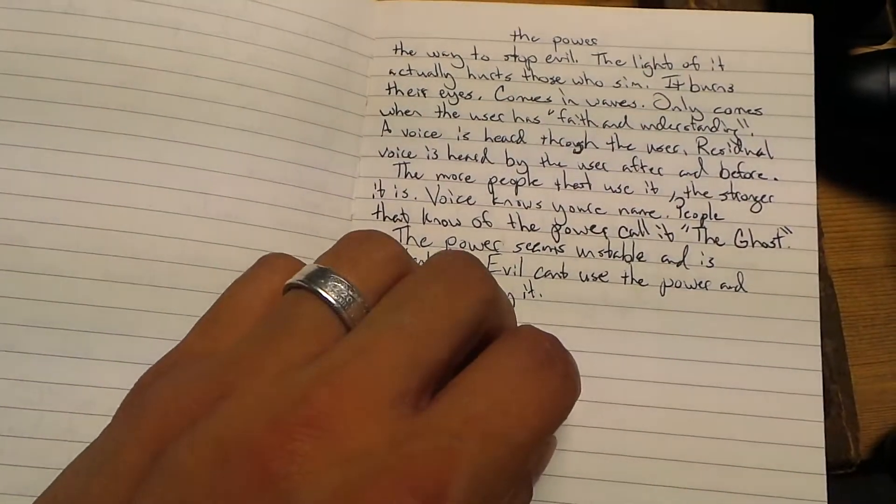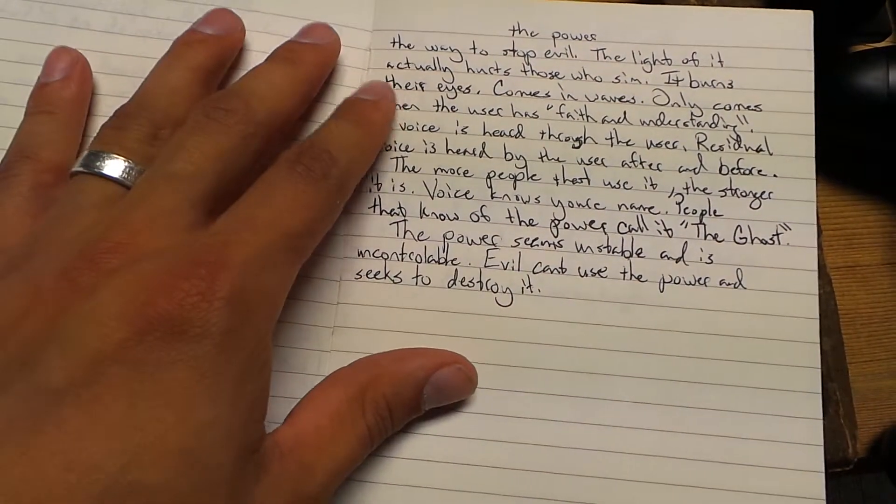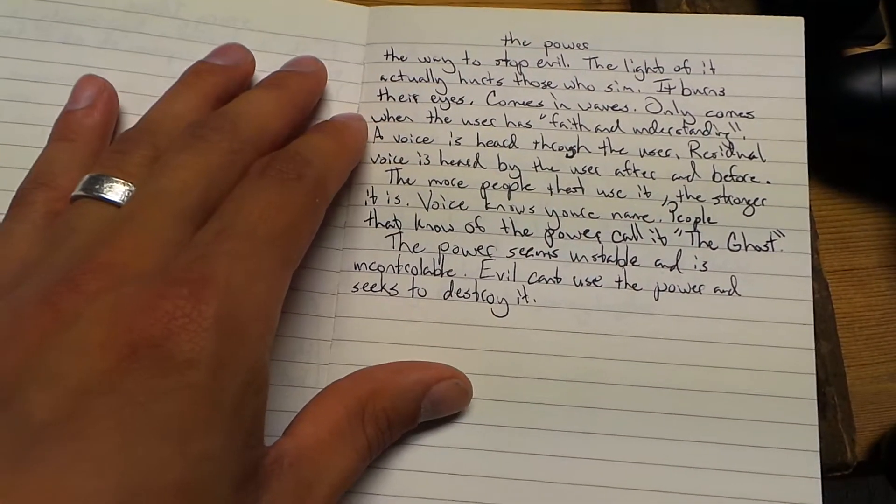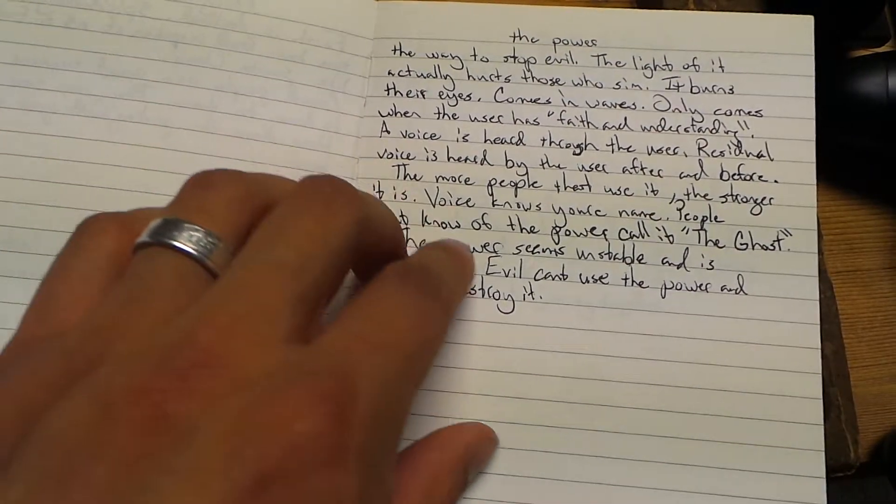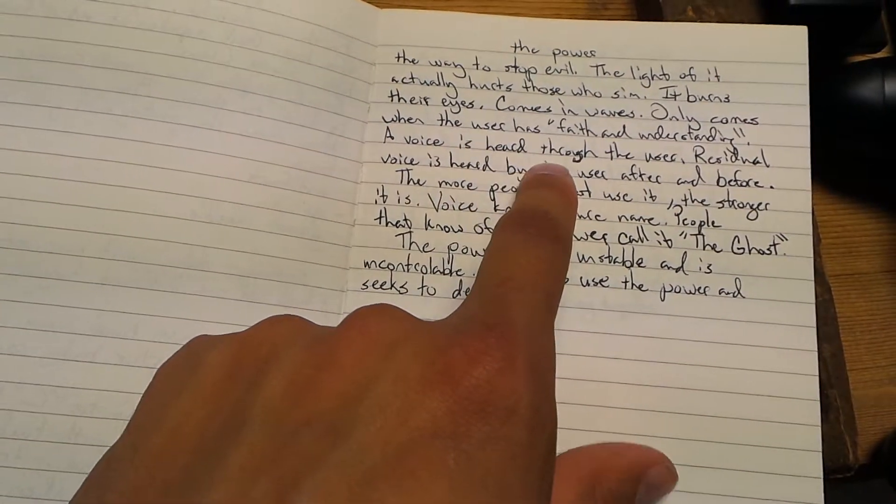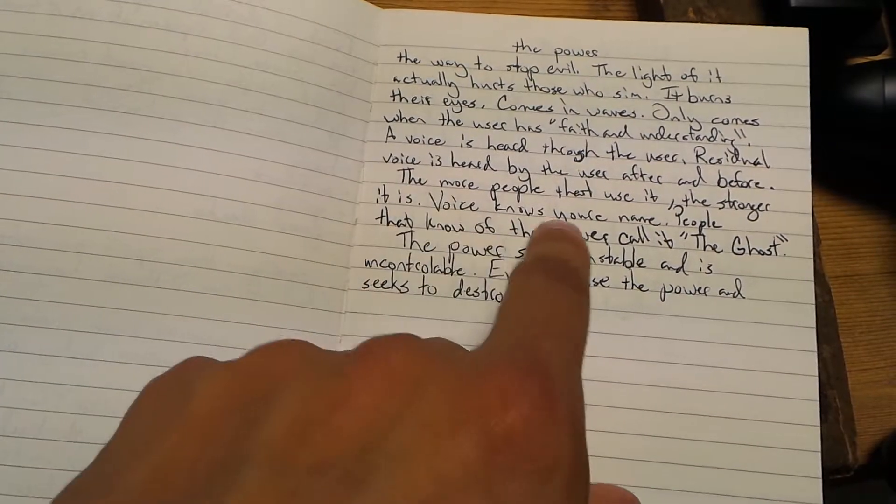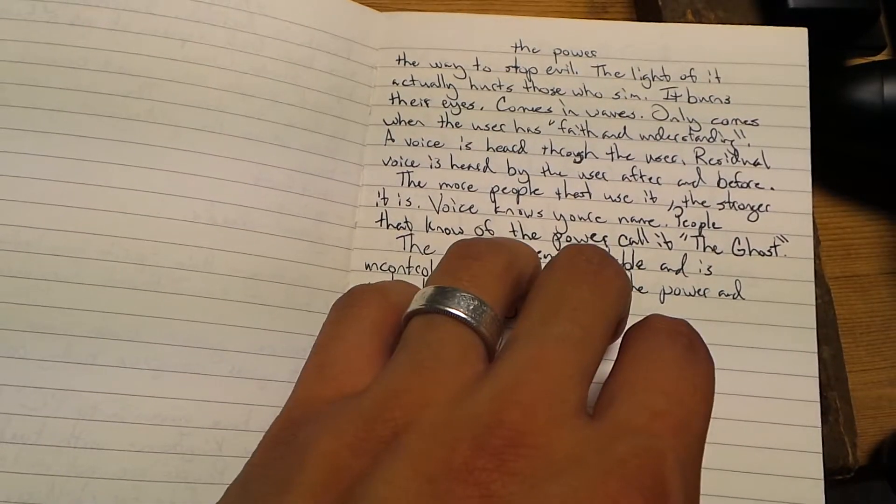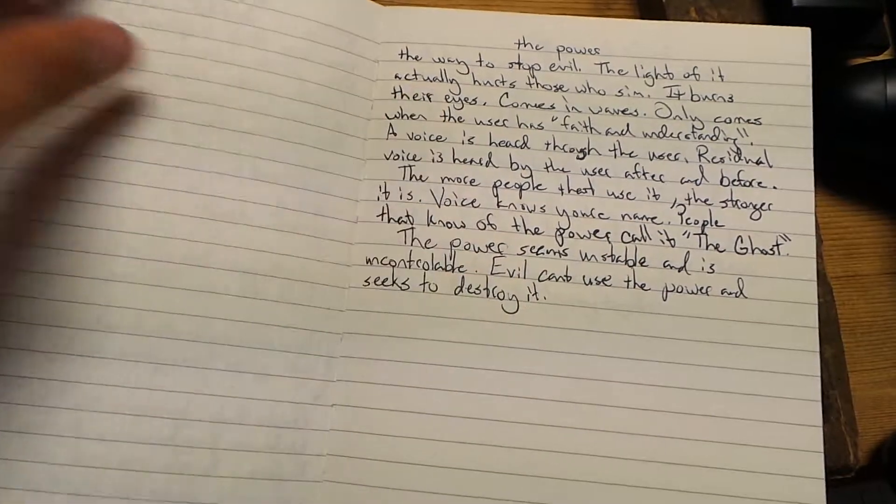The evil people in the story can't even look at the power because the light itself will weaken them. Some people call the power the Ghost because there's somebody talking to them in their minds whenever they're trying to use it. It remains before and after they use it - residually they'll hear mumbling and whispering in their minds after they use it. As of right now they only know one person that uses it - the main protagonist.